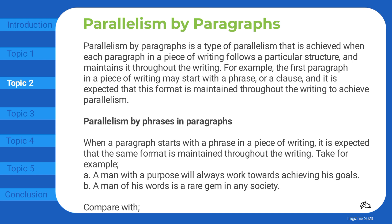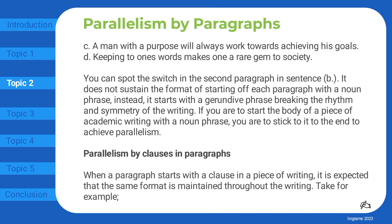Parallelism by phrases in paragraphs. When a paragraph starts with a phrase in a piece of writing, it is expected that the same format is maintained throughout the writing. Take for example: 'A man with a purpose will always work towards achieving his goals. A man of his words is a rare gem in any society.' Compare with: 'A man with a purpose will always work towards achieving his goals. Keeping to one's words makes one a rare gem to society.' You can spot the switch in the second paragraph in sentence B — it does not sustain the format of starting each paragraph with a noun phrase; instead, it starts with a gerundive phrase, breaking the rhythm and symmetry of the writing. If you are to start the body of a piece of academic writing with a noun phrase, you are to stick to it to the end to achieve parallelism.